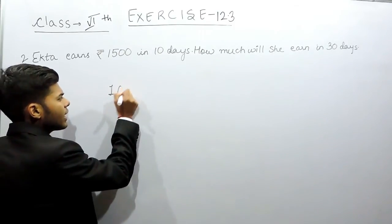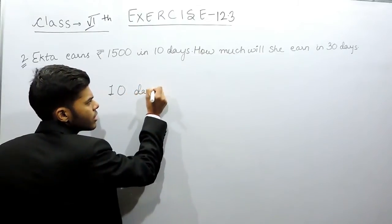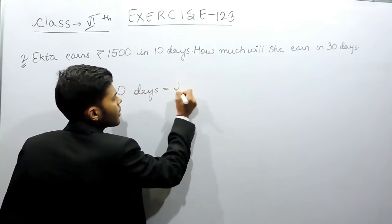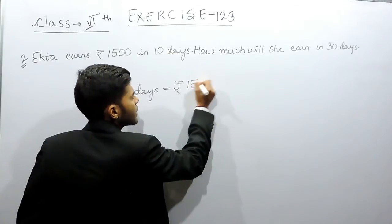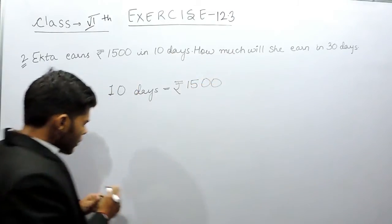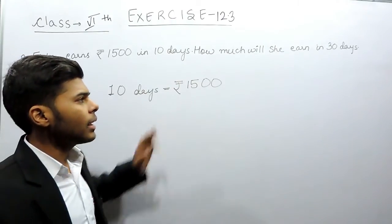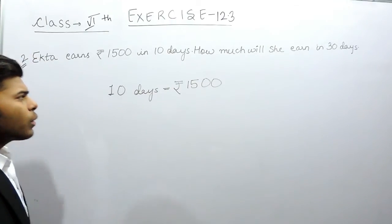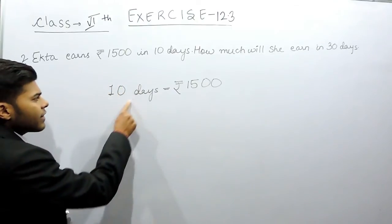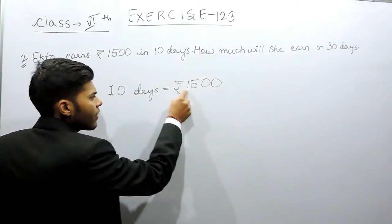We are given that in 10 days she earns 1500 rupees. What we can do is first find how much she earns in one day and then multiply it with 30 days. Or, we can use the fact that in 10 days she earns 1500 rupees.